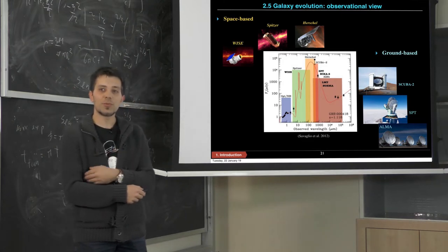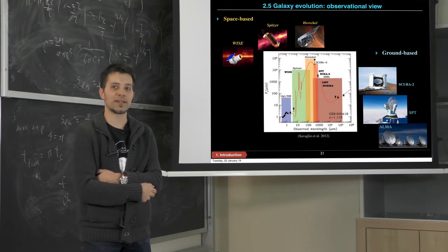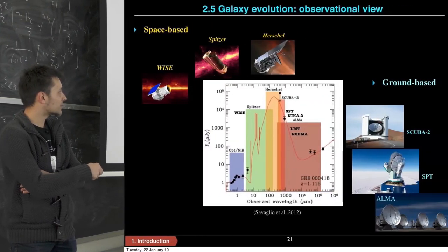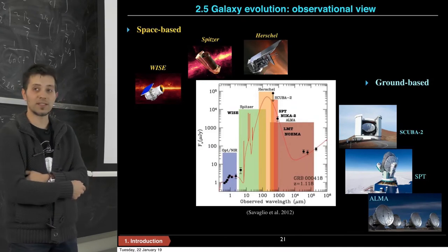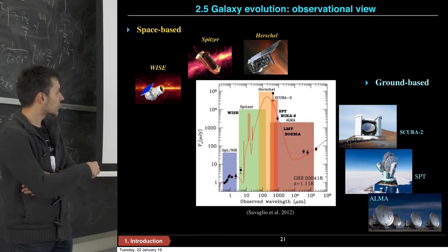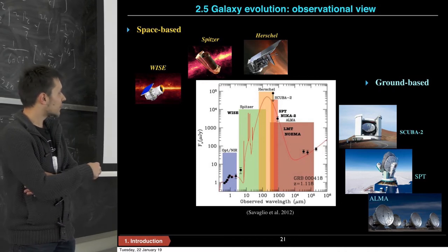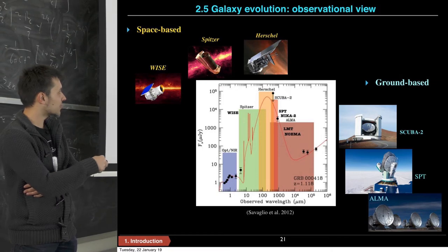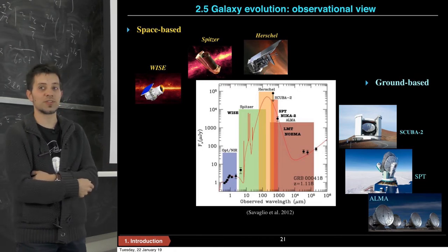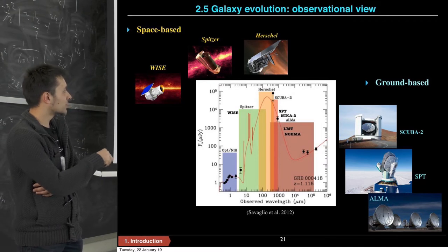To get a much more refined view of physical processes inside galaxies, we have to understand and construct their spectral energy distribution. This is an example of the spectral energy distribution, or SED, of galaxies. On the x-axis is observed wavelength, and on the y-axis is observed flux. The flux ranges from the optical and near-infrared regime to the far-infrared regime, submillimeter regime, and ending in the radio. I have marked the most important telescopes currently active for observing these points used in SED modeling.